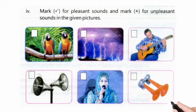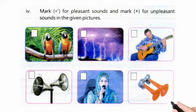Question 4: Mark tick for pleasant sounds and cross for unpleasant sounds in the given pictures. (خوشگوار آواز کے لیے tick اور ناخوشگوار آواز کے لیے cross لگانا ہے۔) Answers: chirping of birds — tick; lightning — cross; music — tick; loudspeaker — cross; a lady speaking — tick; last block — cross.